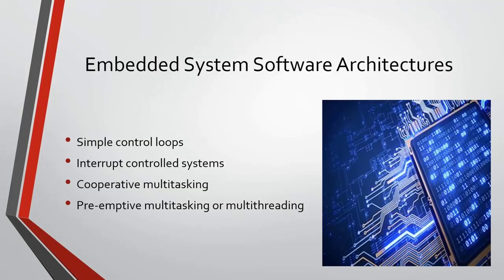Let's look into embedded systems software architectures. There are several common architectures which become necessary as embedded systems grow and become more complex. These include simple control loops, which call subroutines that manage a specific part of the hardware or embedded system programming — for example, a ticket printer. There are also interrupt-controlled systems, which have two loops: a main one and a secondary one, where interruptions in the main loop trigger the secondary task.